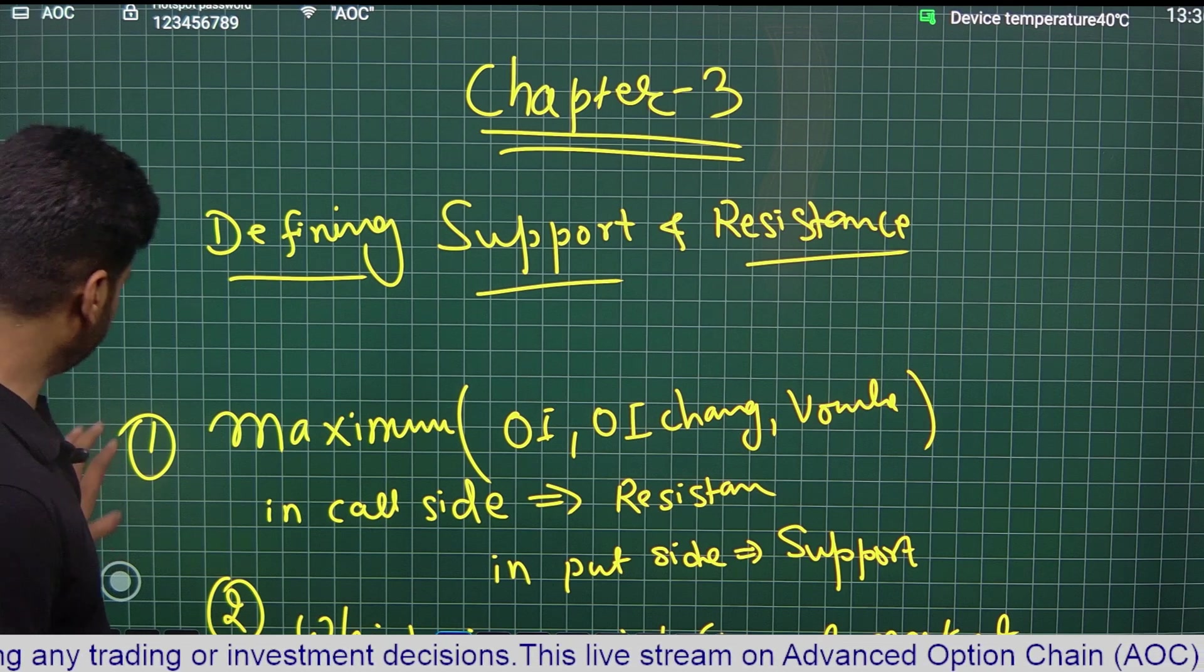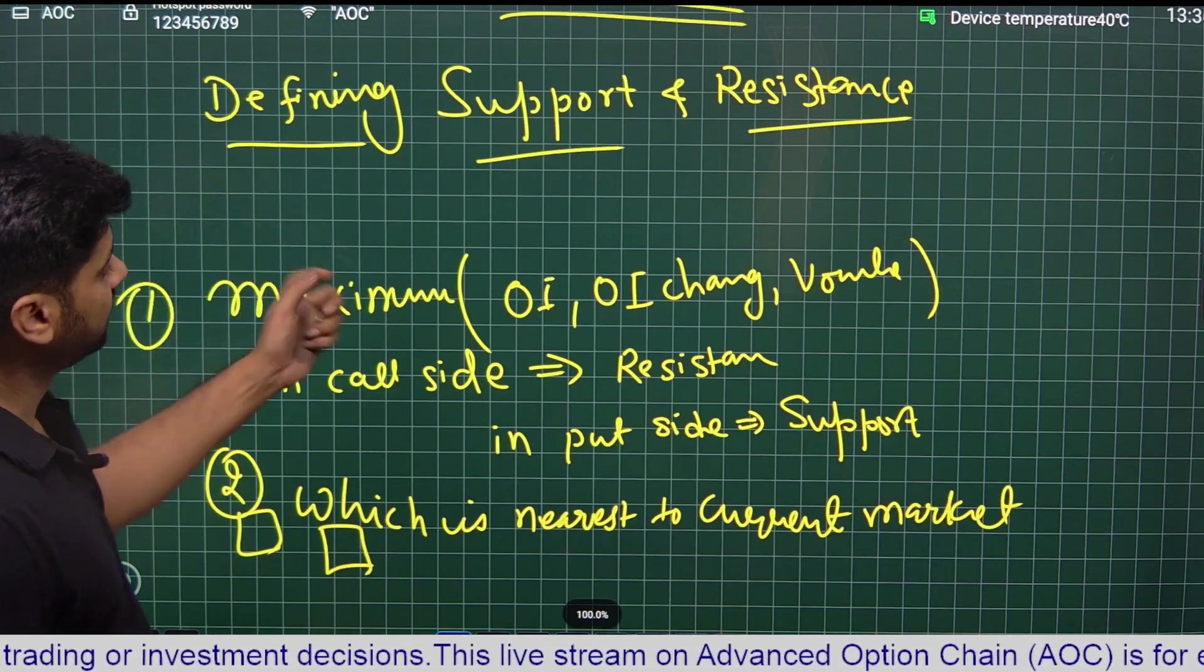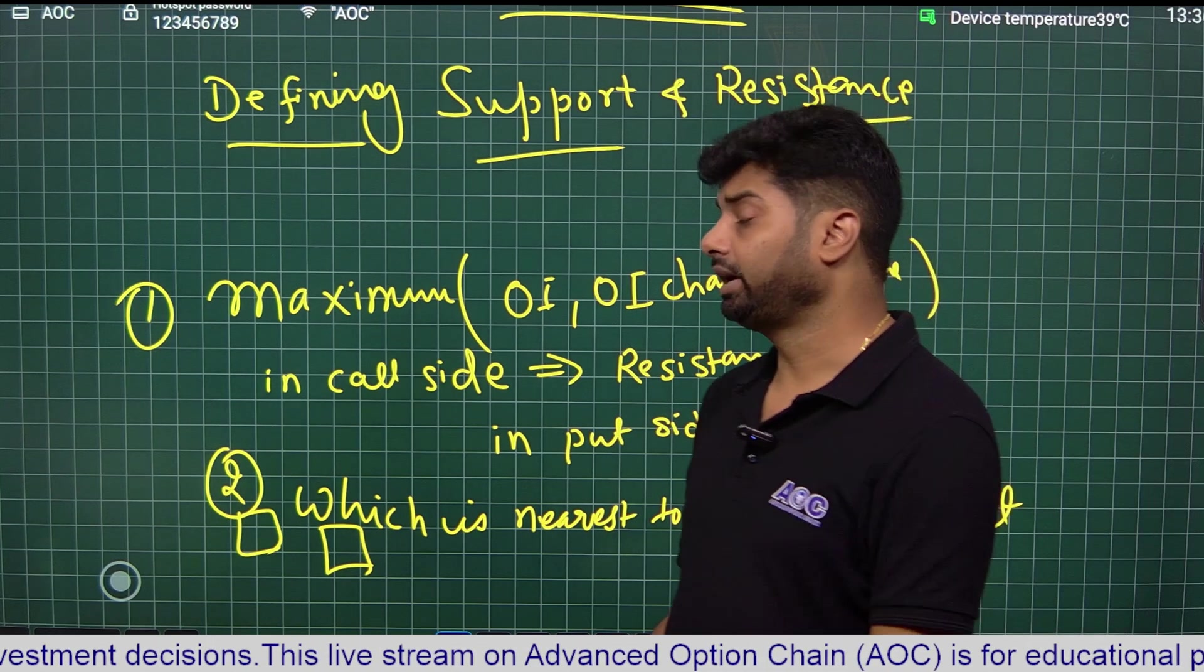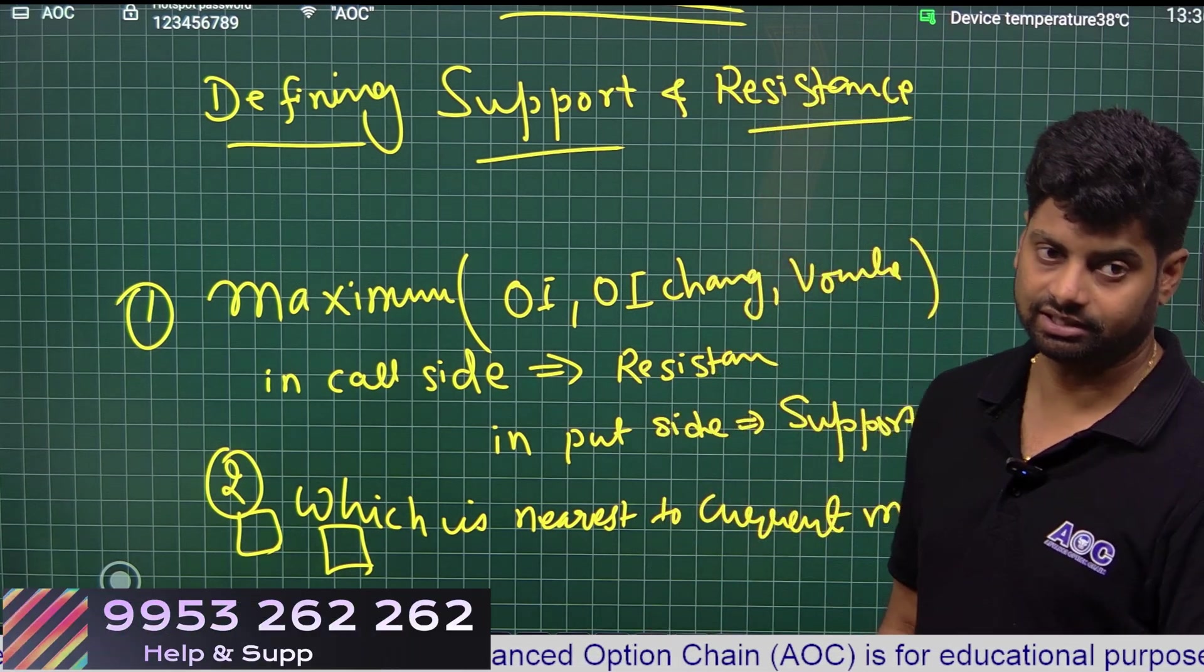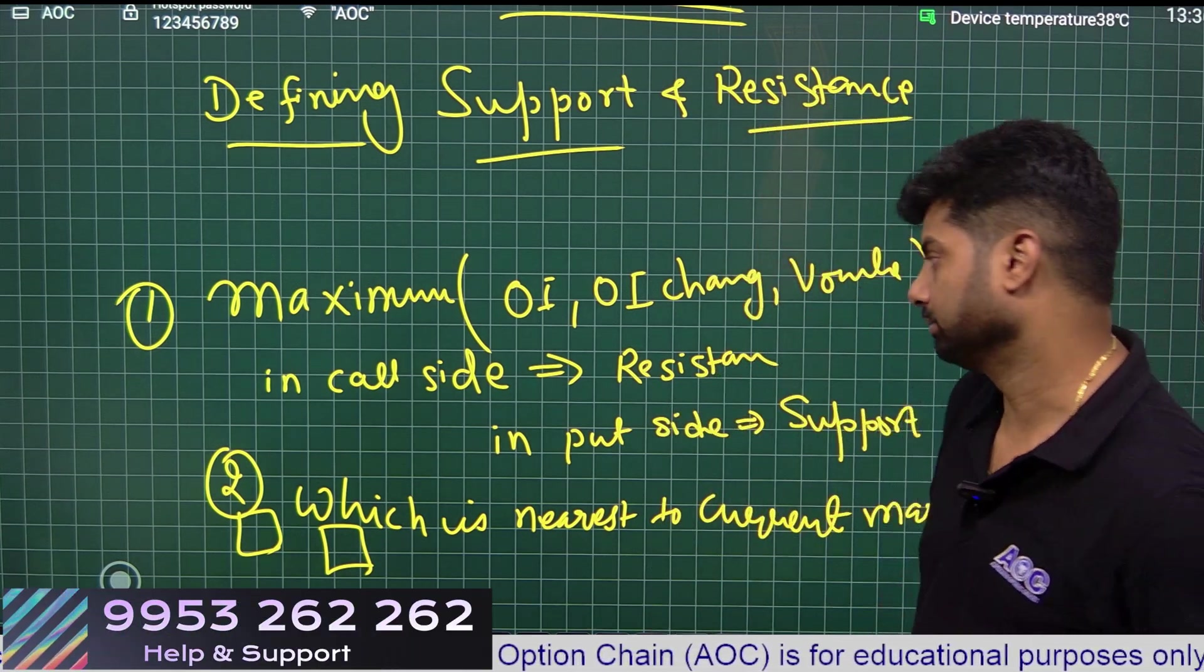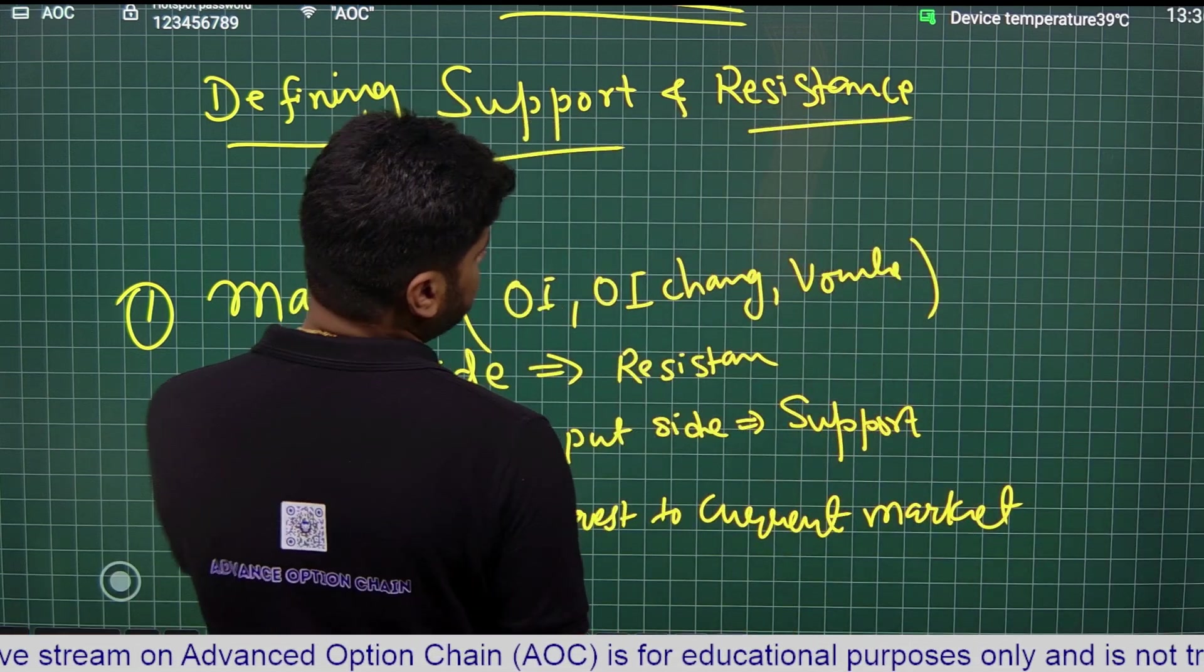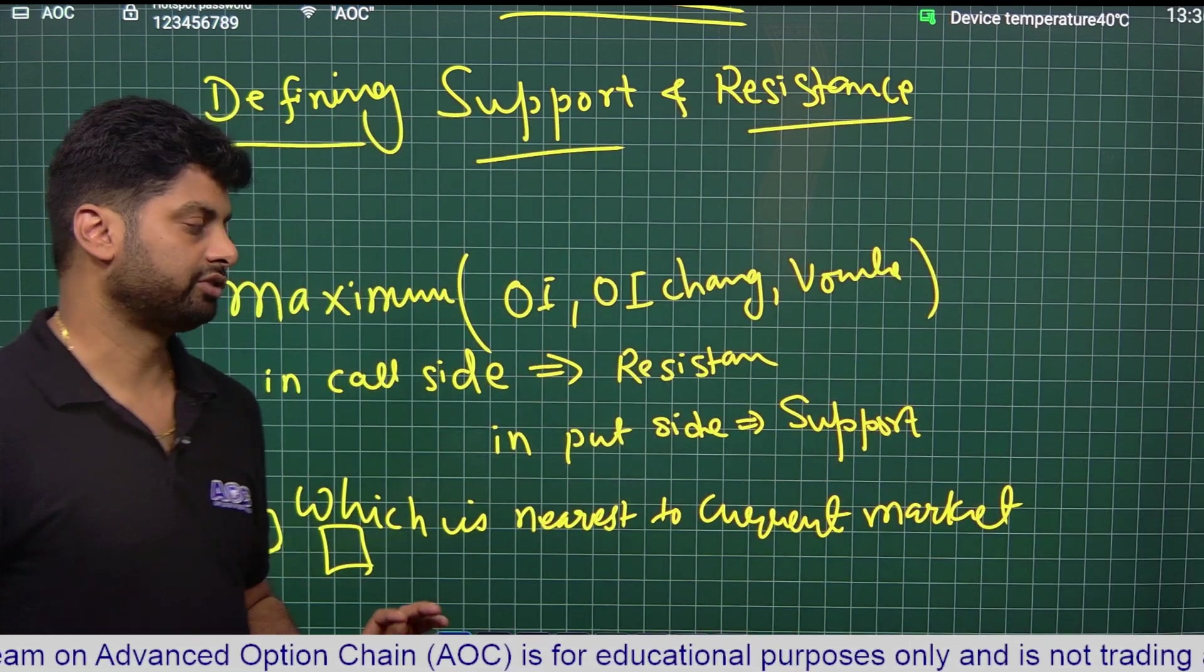To do that we have two simple rules. First we need to know what are the maximum OI, OI change and volume and at what strike price. So we'll select the maximum OI, OI change and volume of that strike price.